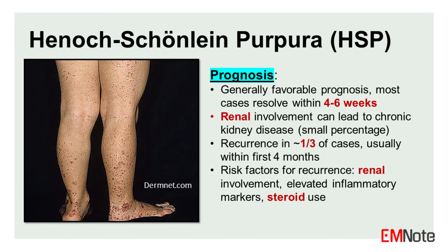Prognosis and Recurrence. The prognosis for HSP is generally favorable, with most cases resolving within four to six weeks without long-term complications. However, renal involvement can lead to chronic kidney disease in a small percentage of cases, particularly in adults. Recurrence is not uncommon, occurring in approximately one-third of cases, usually within the first four months after the initial episode. Factors associated with increased risk of recurrence include renal involvement, elevated inflammatory markers, and steroid use during the initial episode.